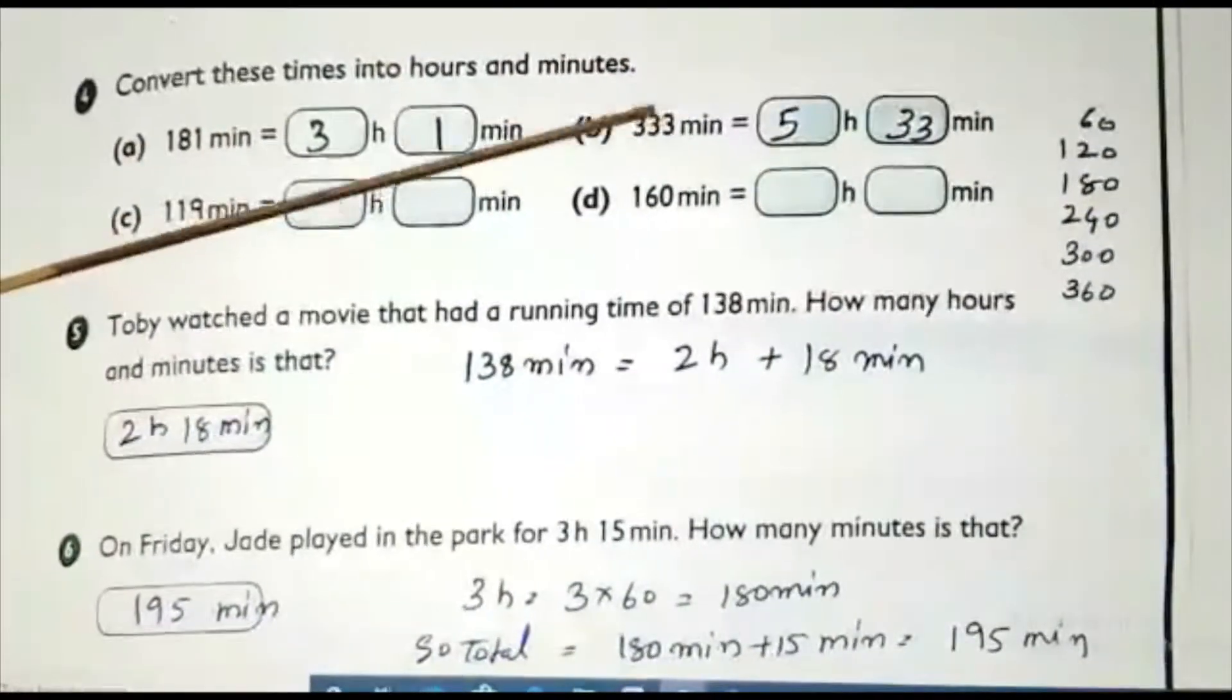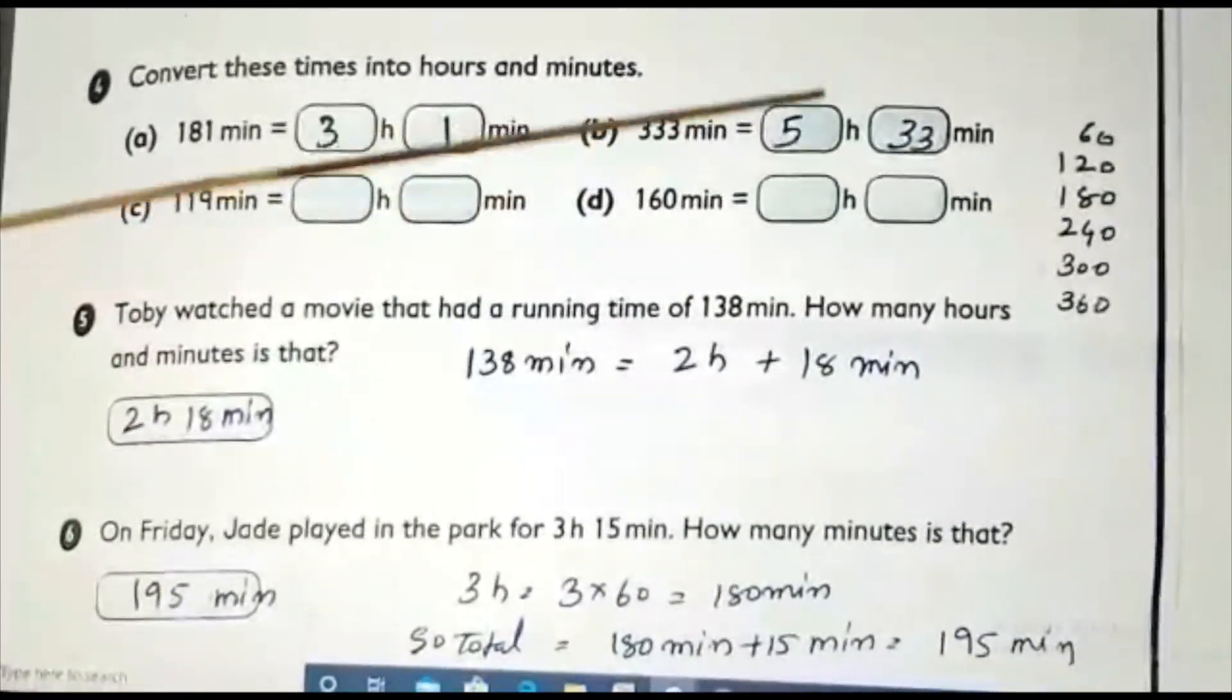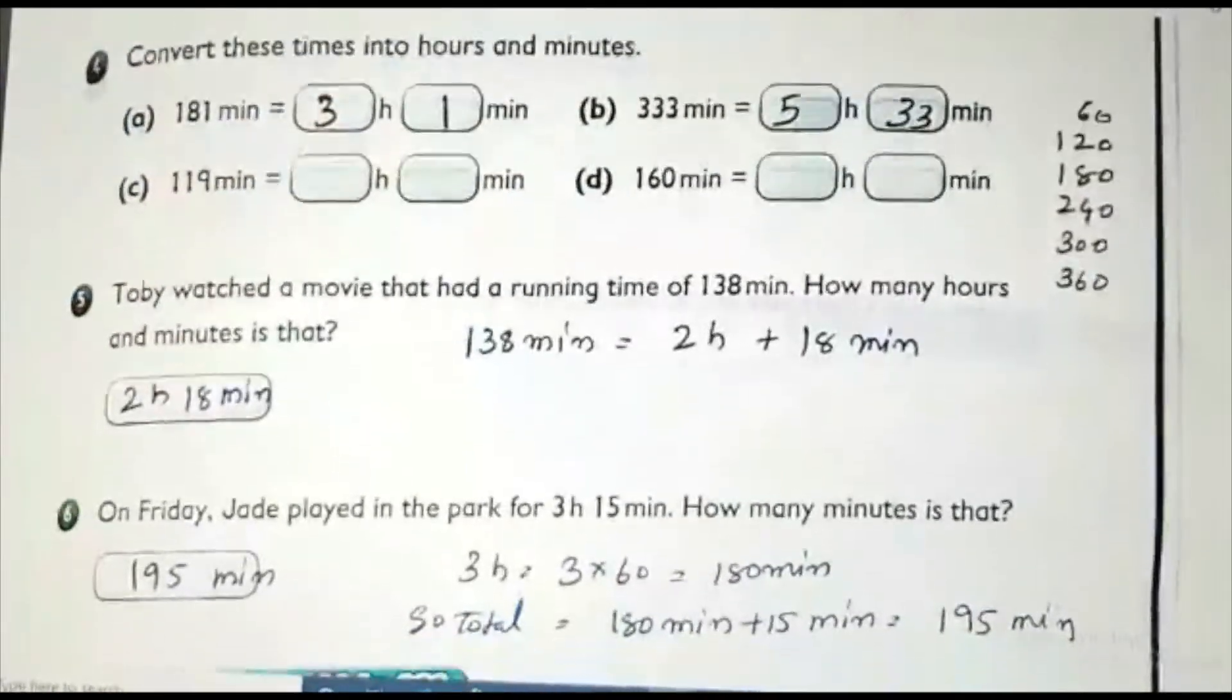Because after 300, we know 333 minus 300 is 33 minutes. So, 5 hours, 33 minutes. Same way you do this. Okay.